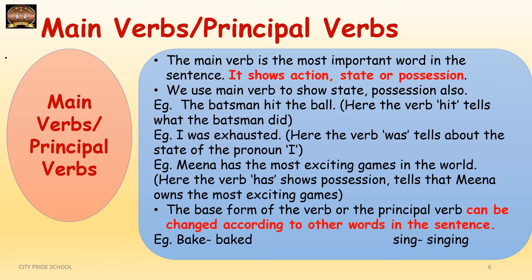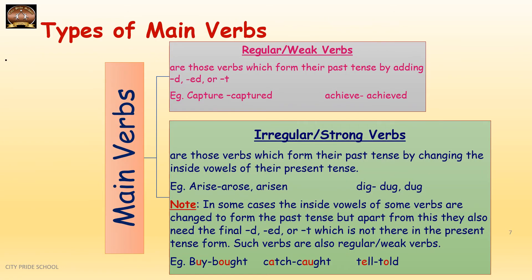Now let's look at the types of main verbs. There are two types: regular verbs, also known as weak verbs, and irregular verbs, also known as strong verbs. The name itself is self-explanatory. A regular verb forms its past tense by adding D, ED, or T at the end. For example, 'capture' becomes 'captured' and 'achieve' becomes 'achieved.' Any verb whose past tense is formed by adding D, ED, or T is a regular or weak verb.